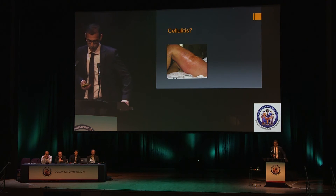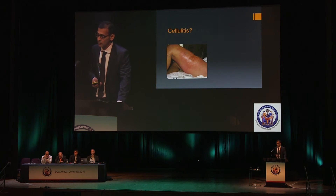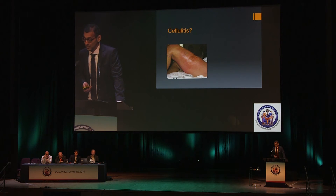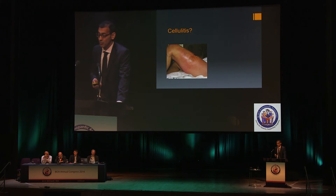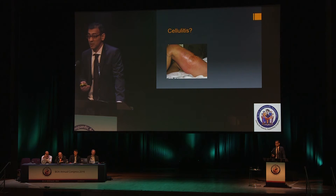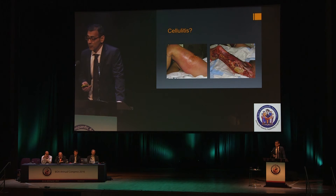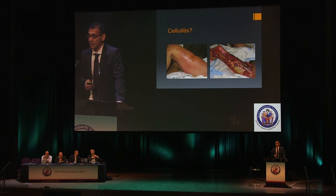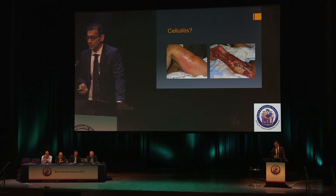You would quite often see this on your post-trauma ward round as cellulitis — it certainly looks like it. It wouldn't be wrong for the uninitiated to say 'this looks like cellulitis, we should treat with antibiotics.' But this is what that person actually had — necrotizing fasciitis. This is post-debridement, so you can see how difficult it can be to get these patients early and get them into theatre early.